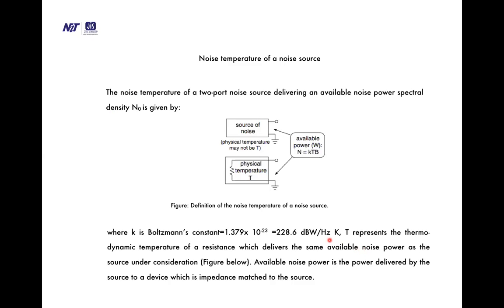The noise temperature of a two-port noise source delivering an available noise power spectral density N₀ is defined as follows. In this model, if the noise is generated by a noise source at physical temperature T, then N = kTB, where k is the Boltzmann constant, T is the temperature, and B is the bandwidth. The noise temperature represents the thermodynamic temperature of a resistance which delivers the same available noise power as the source under consideration.